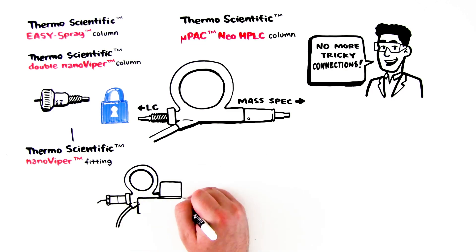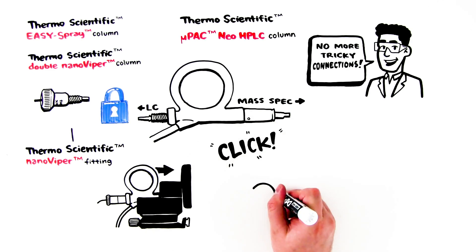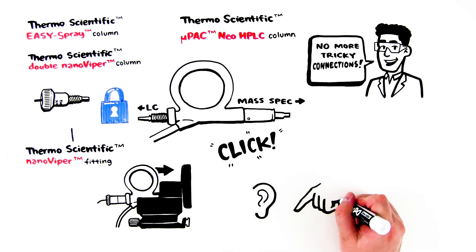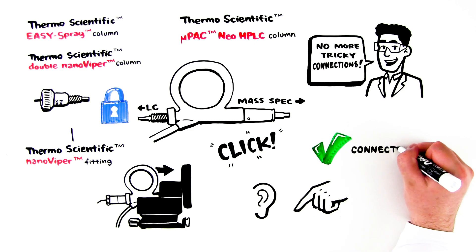The second connection is to the mass spectrometer's Easy Spray source. The innovative design allows the column to simply click into place. The click can be both heard and felt, so you know the connection has been made correctly.